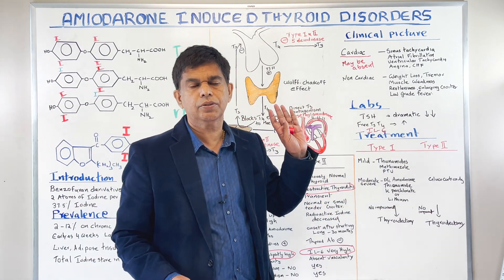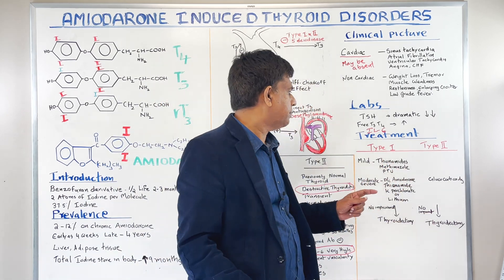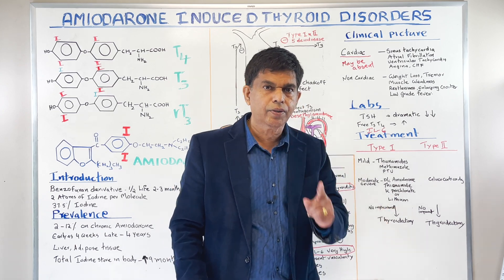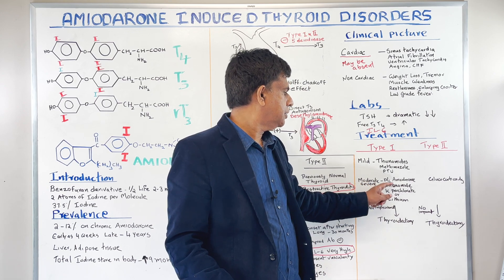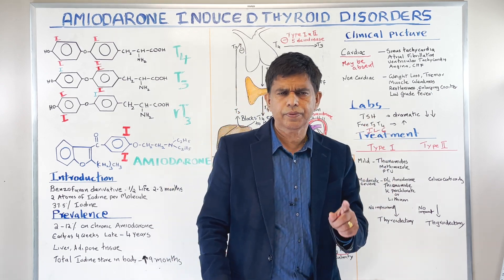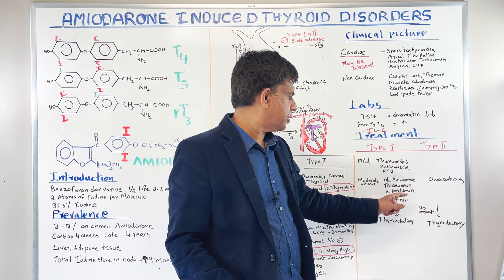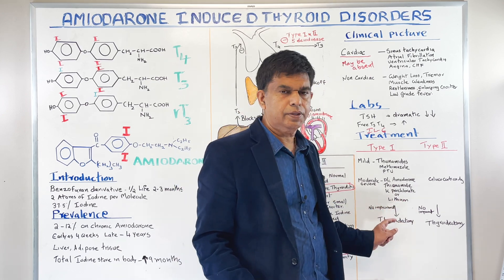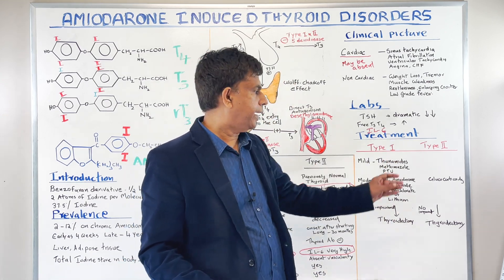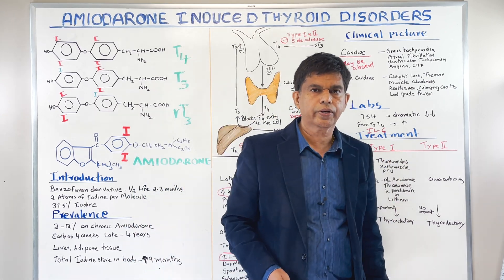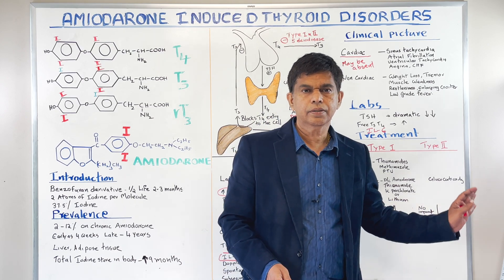Treatment is different for type 1 and type 2. For type 1 mild cases, you give thionamides — methimazole and PTU. If it is moderate to severe, you stop the amiodarone and can add potassium perchlorate or lithium. If all of these are resistant and not working, then you have to go to thyroidectomy. For type 2, you start with glucocorticoids, and if there's no improvement and it's resistant, you can do thyroidectomy.